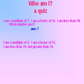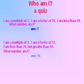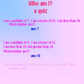Next question — click again. I am a multiple of 5 and a factor of 30. I am odd. What number am I? The answer is 15.